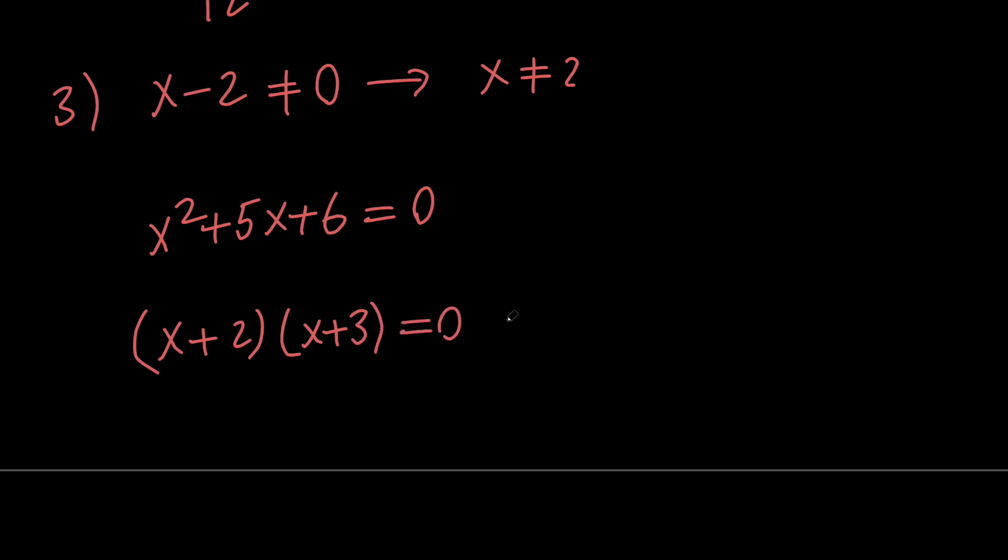That means that x either equals negative 2 or it is equal to negative 3. And none of these two values is equal to 2. That means that both of them are valid solutions.